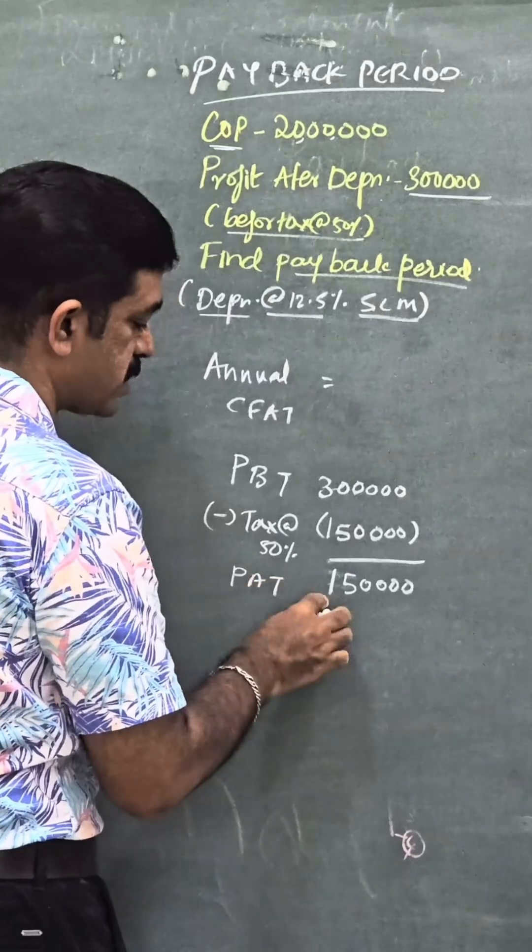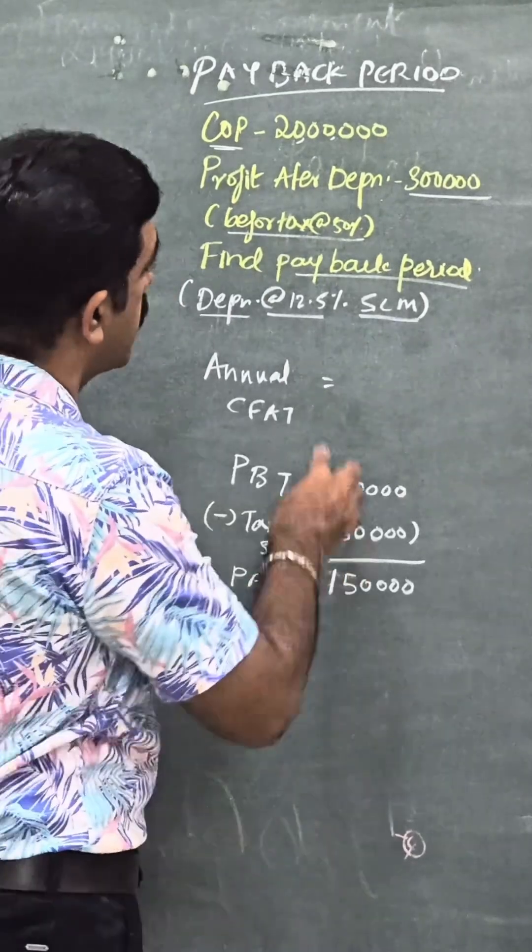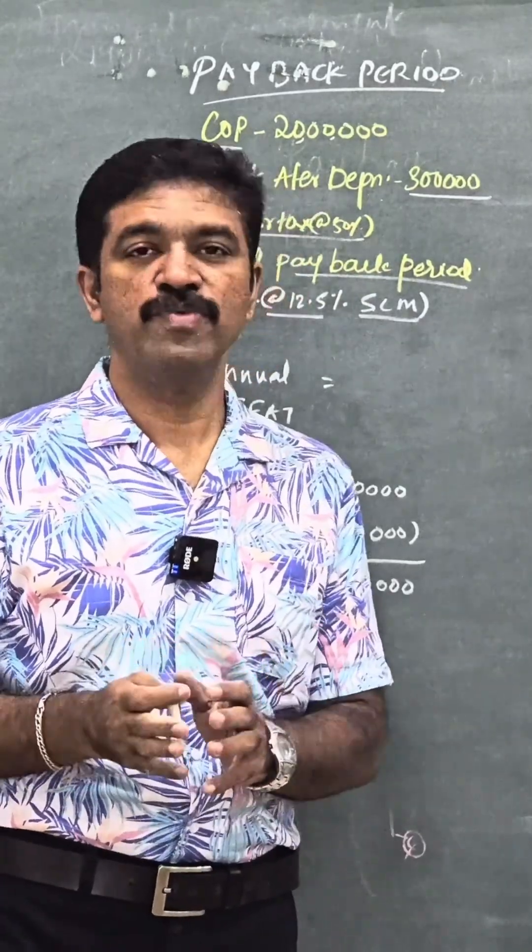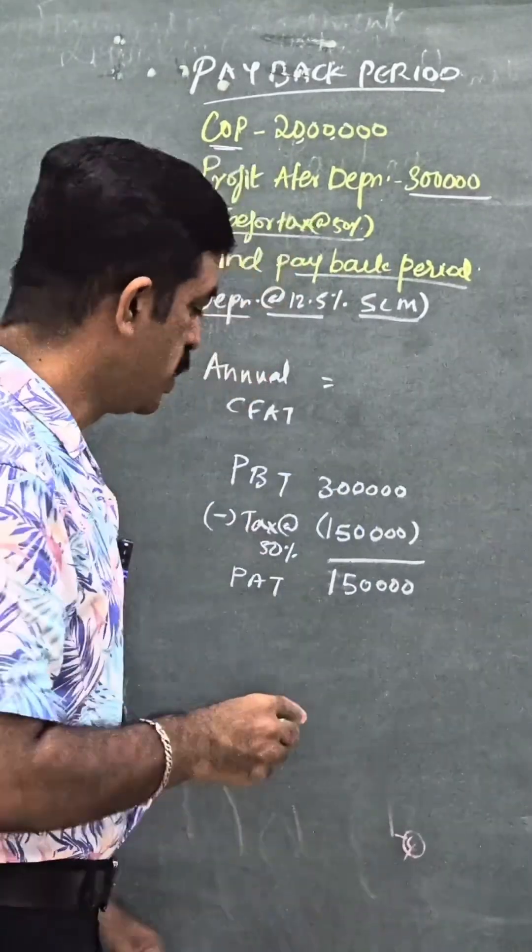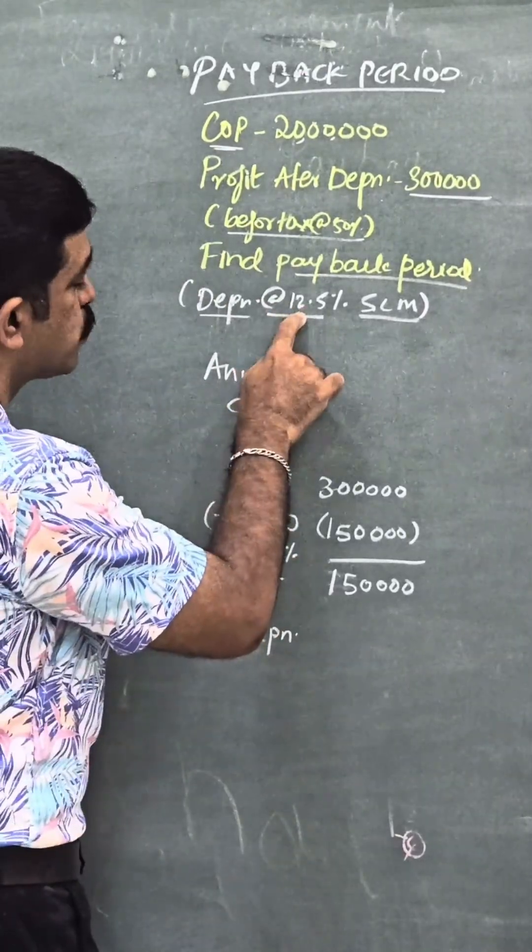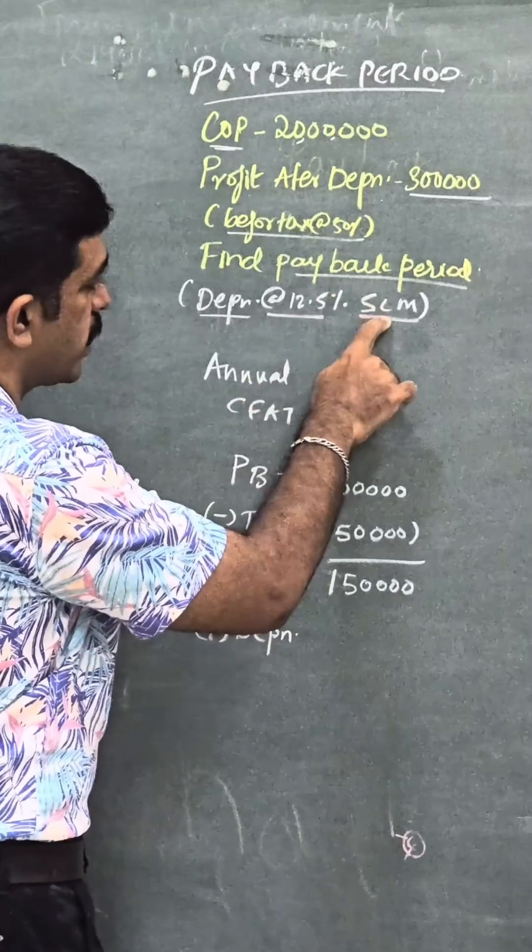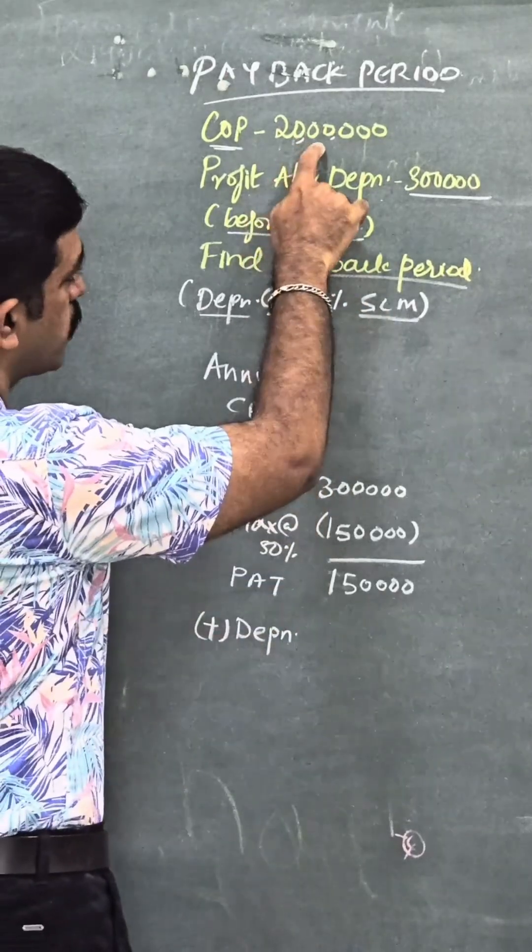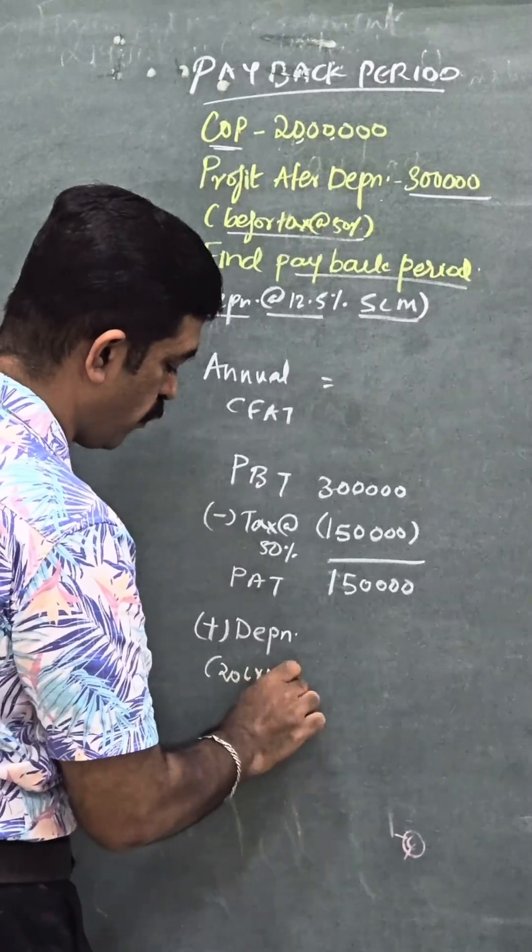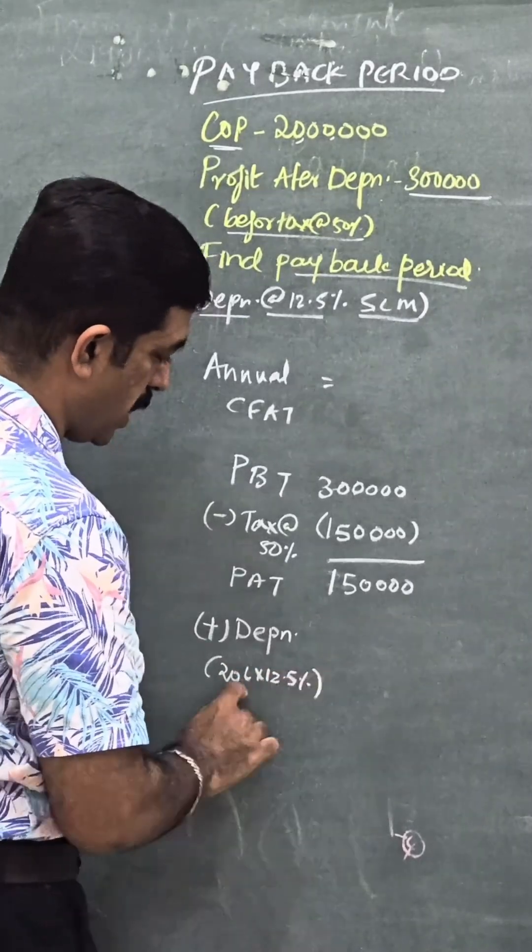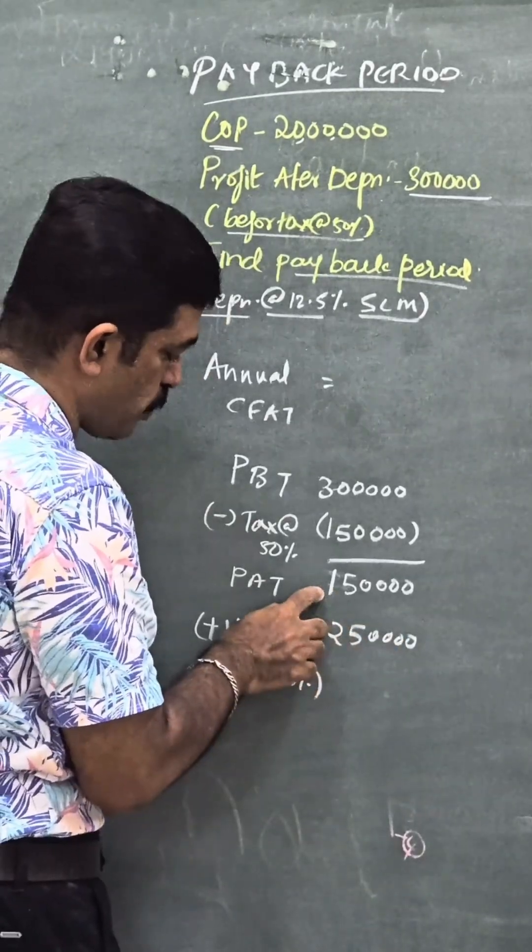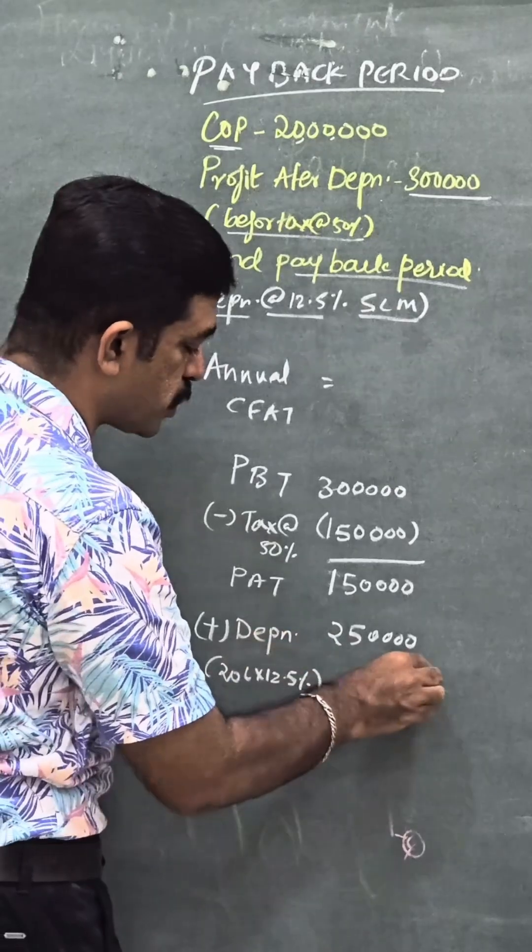This profit is arrived after subtracting depreciation, and in order to find out the cash flow after tax, we have to add back the depreciation. So how to find out depreciation? It is mentioned it is 12.5 percent straight line method applied on the cost of the project. So it is basically 20 lakh into 12.5 percent, which works out to 2 lakh 50,000. Now if you add this profit after tax and depreciation, you are going to get 4 lakh.